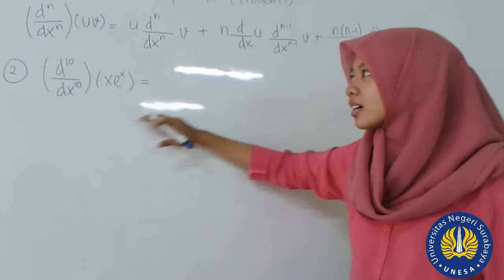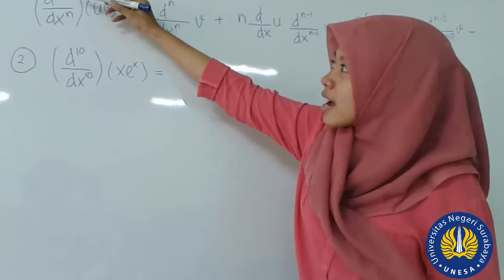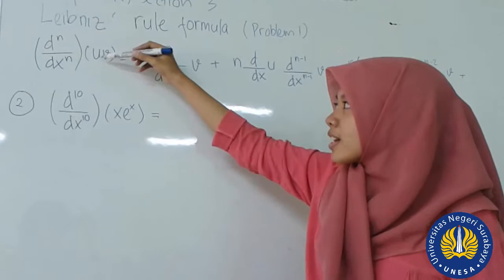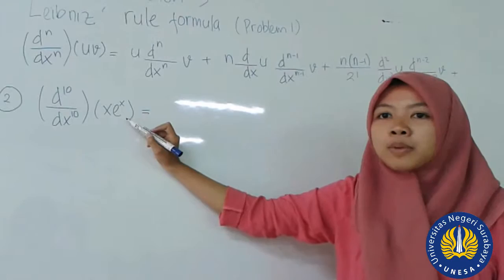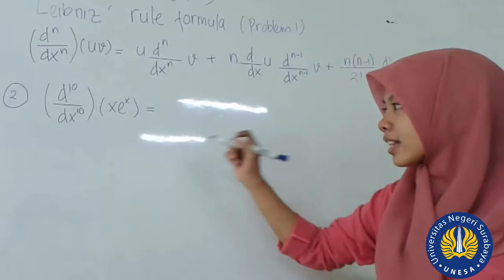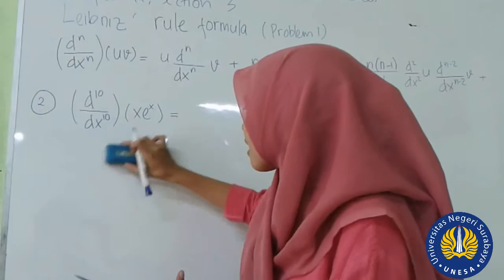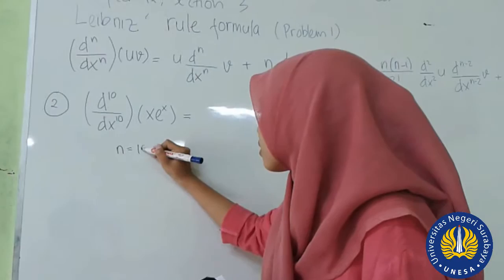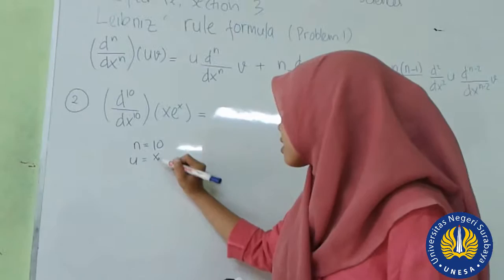From this problem, you can see that n equals 10, u is equal to x, and then v is equal to e to the power x. We can write here, use this. Actually, first we put n equals 2. Then u equals x, and then v equals e to the power x.